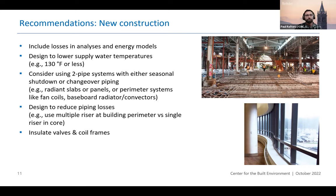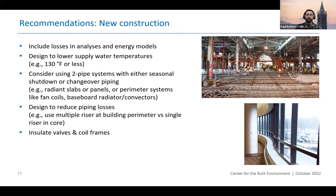There are other things you can do as a designer or advocate for as an owner. For example, considering two-pipe systems with seasonal shutdown or changeover piping means that the losses happen within the envelope at the right time of year so they have a minimal effect. Right now, losses are generally happening throughout the year — even in summer you pay for it twice: you pay for the heat to heat up the hot water that gets lost in the building, and then you pay for chilled water and electricity consumption to reject that heat. Two-pipe systems allow that to happen more naturally. You can also design to reduce piping losses by minimizing the amount of piping using multiple risers instead of a single riser and floor-level distribution on every single floor.